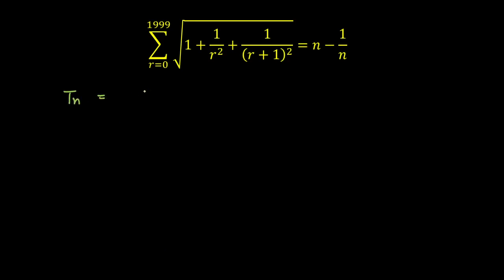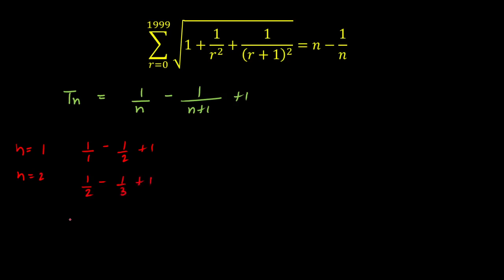So T(n) equals 1/n minus 1/(n+1) plus 1. As we start putting n equal to 1, 2, 3, and so on, we see the cancellation of alternate terms. For n=1: 1/1 minus 1/2 plus 1. For n=2: 1/2 minus 1/3 plus 1. For n=3: 1/3 minus 1/4 plus 1. The nth term is 1/n minus 1/(n+1) plus 1. Adding all these terms gives the sum of the series, and we can see cancellation of alternate terms.